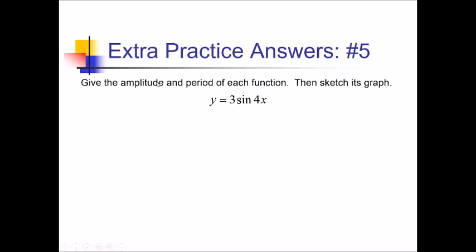For this one, I want the amplitude and period and the graph. For the amplitude, I've got the coefficient of my trig function — this 3 right here. And then for the period, I need to do 2π divided by this b value of 4, and I can reduce that to π over 2. So my graph is going up and down by 3 for every quarter period I take, and the length of one cycle is π over 2.